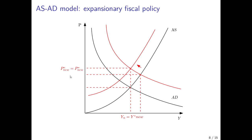In the medium run, the dynamics described before kick in. Since actual prices are higher than price expectations in the short run, labor unions and workers adjust their price expectations upwards in wage negotiations. This leads to a leftward shift of the AS curve and the economy converges back to the medium run equilibrium where output equals natural output. So expansionary fiscal policy achieves a temporary boost in employment and output, but in the medium run the price of this short run expansion is a higher price level.